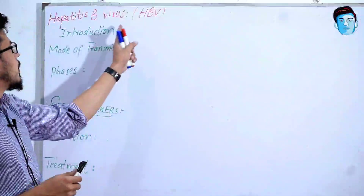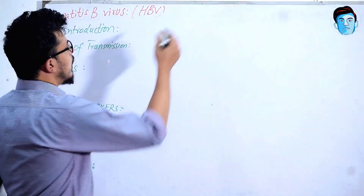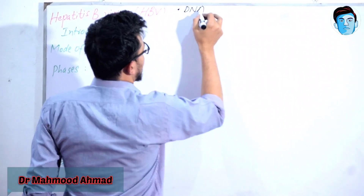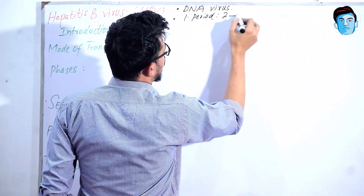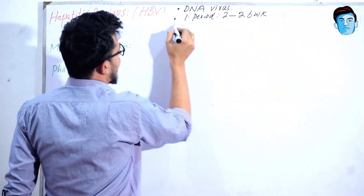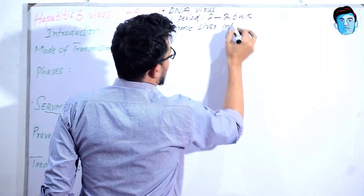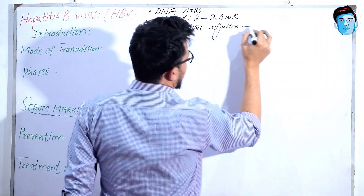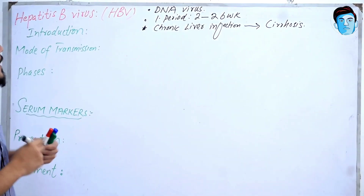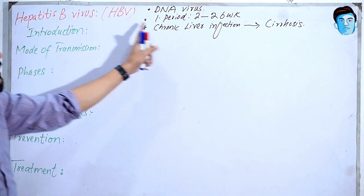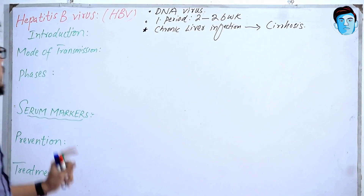Welcome doctors. Now let's talk about the Hepatitis B virus. Hepatitis B virus is the only hepatotrophic virus which is a DNA virus. Its incubation period is 2 to 26 weeks. The most important point is that the Hepatitis B virus causes chronic liver infection that often leads to cirrhosis.